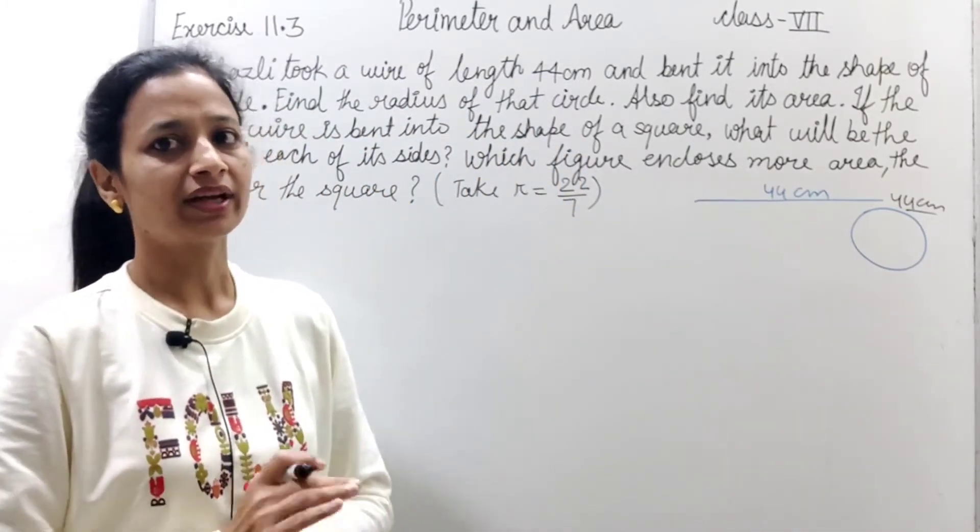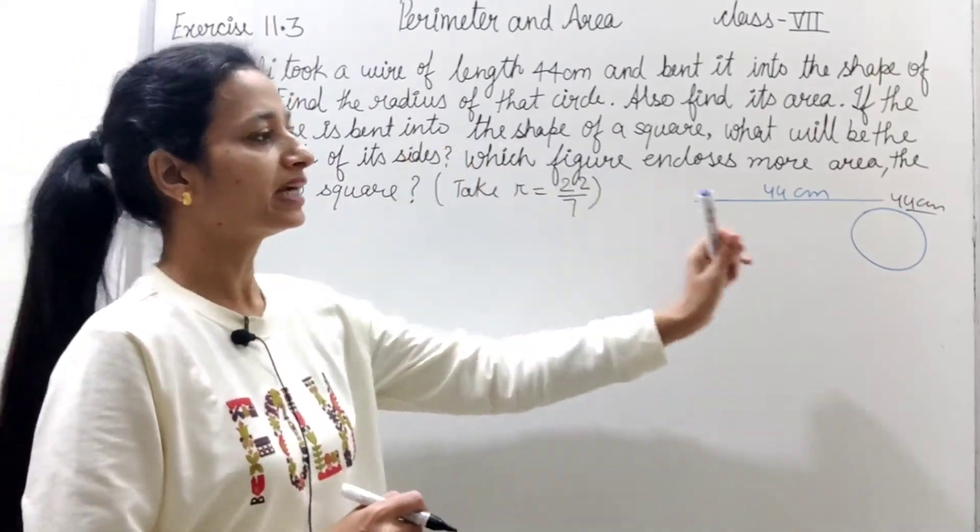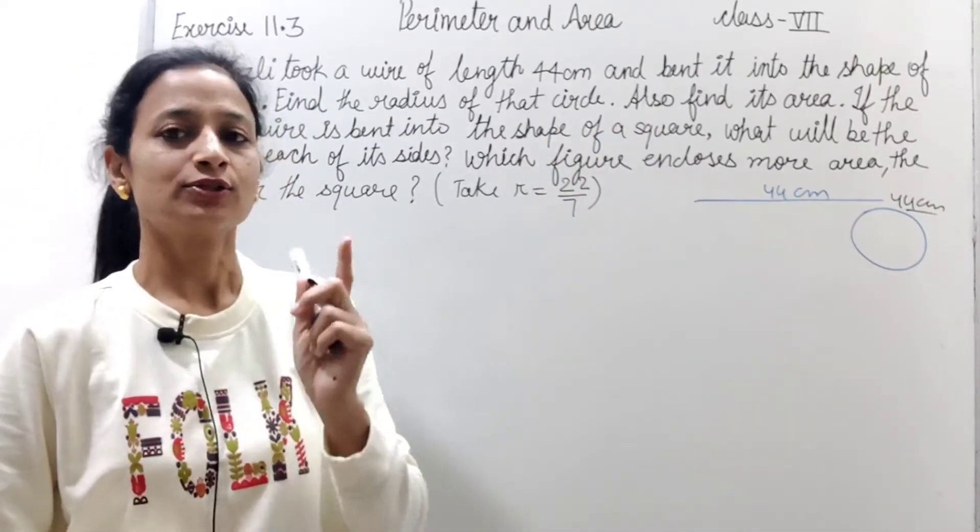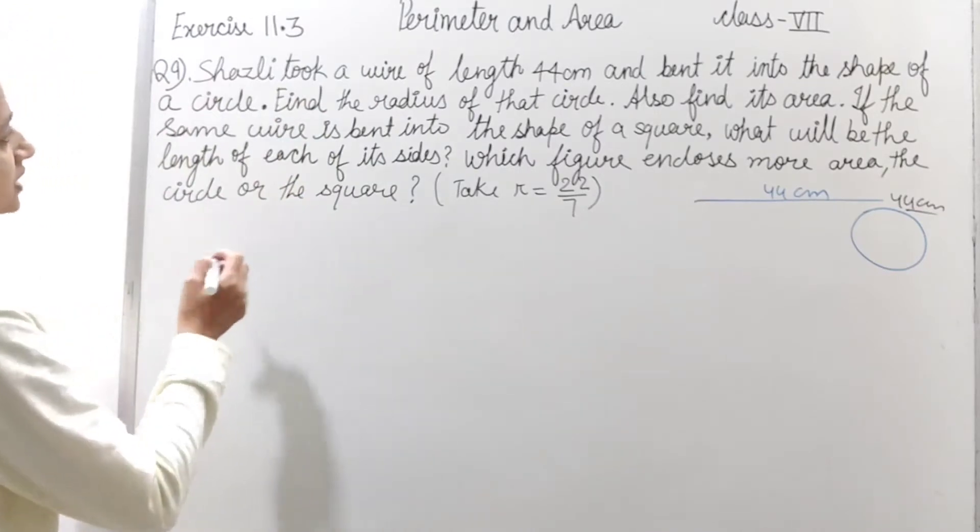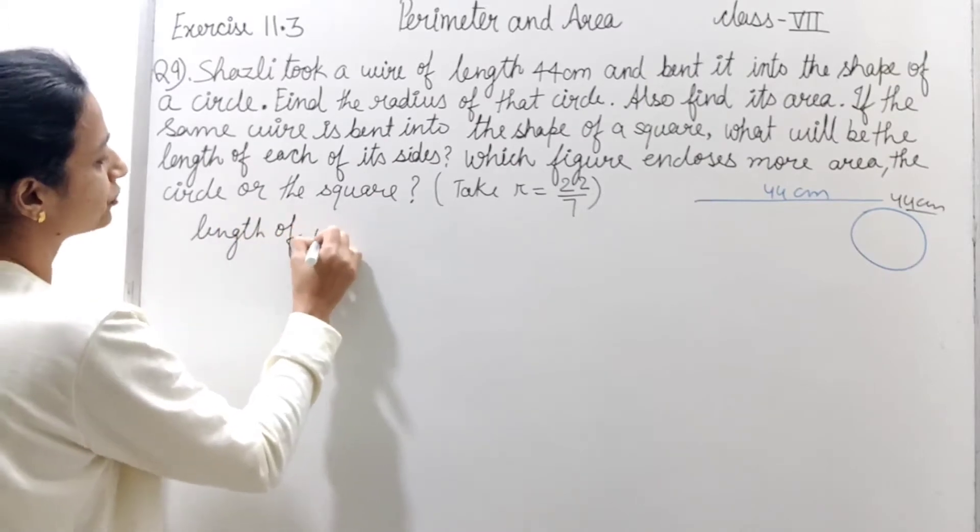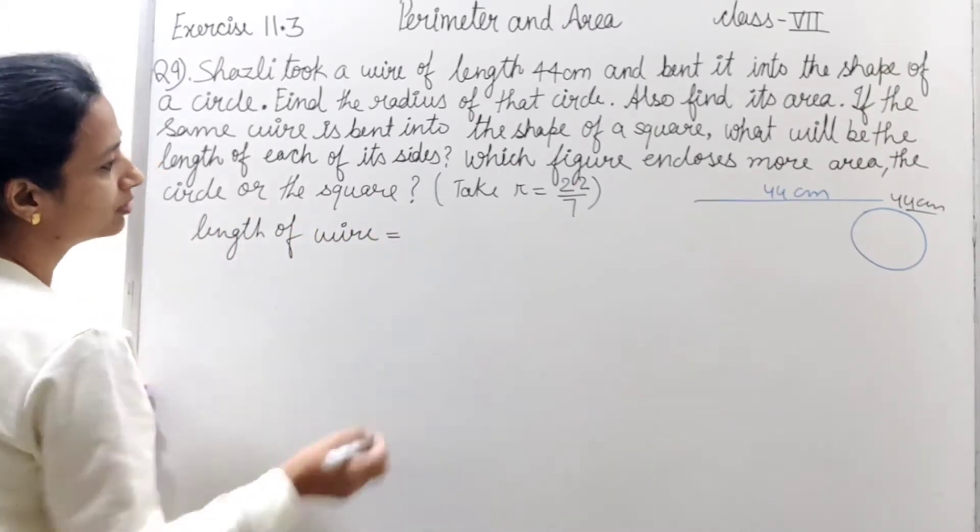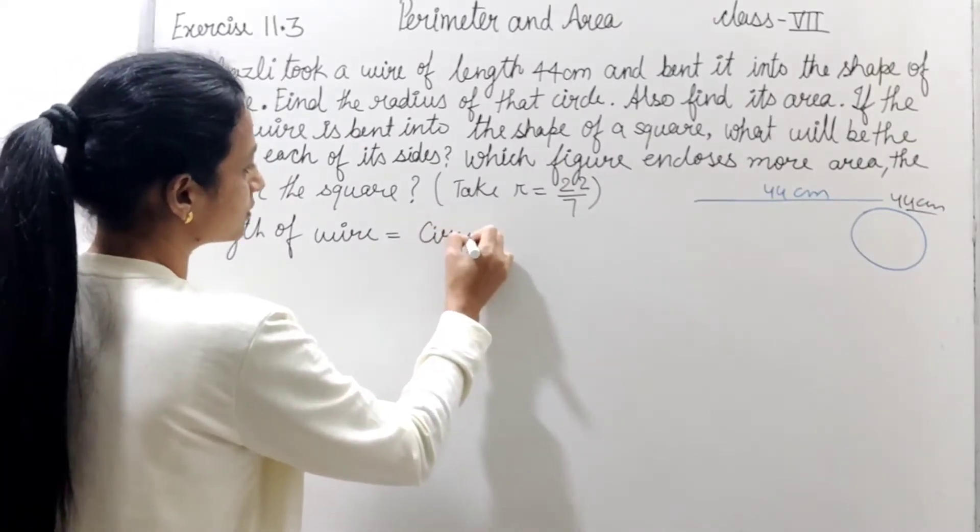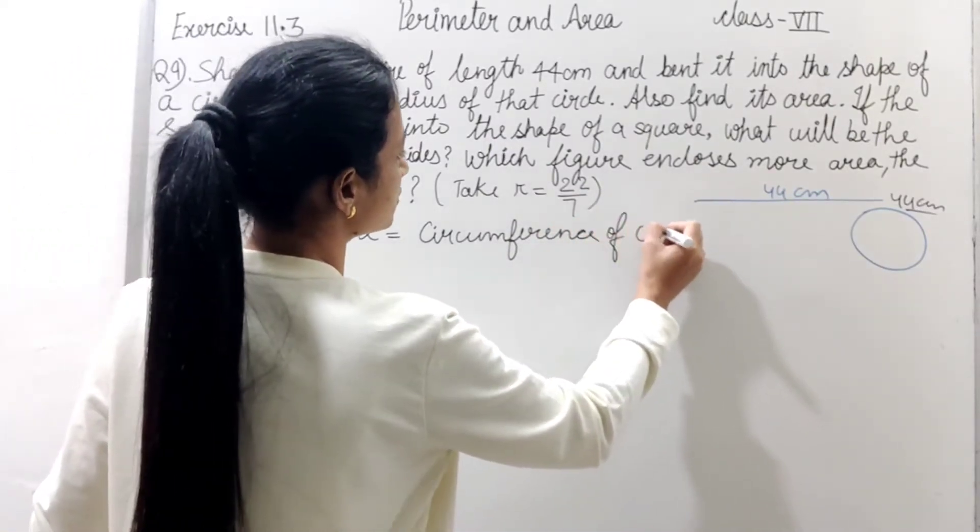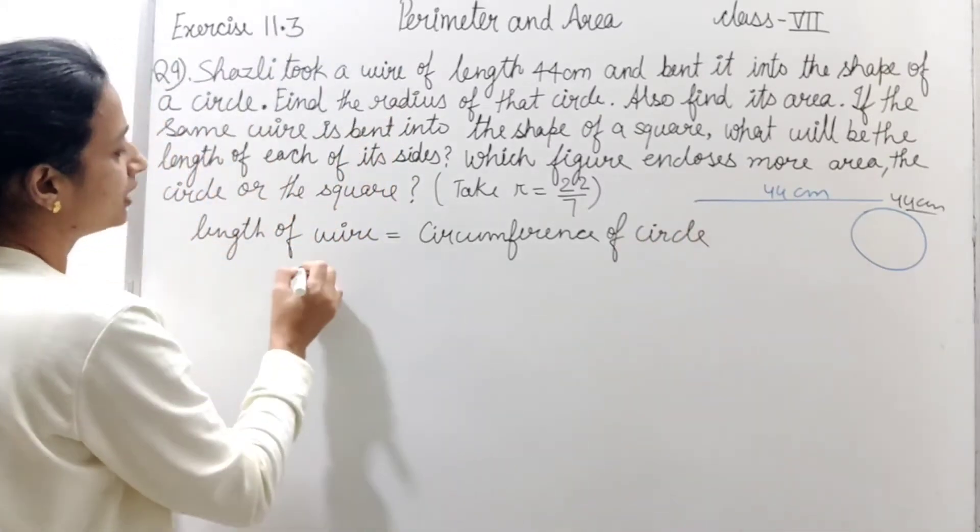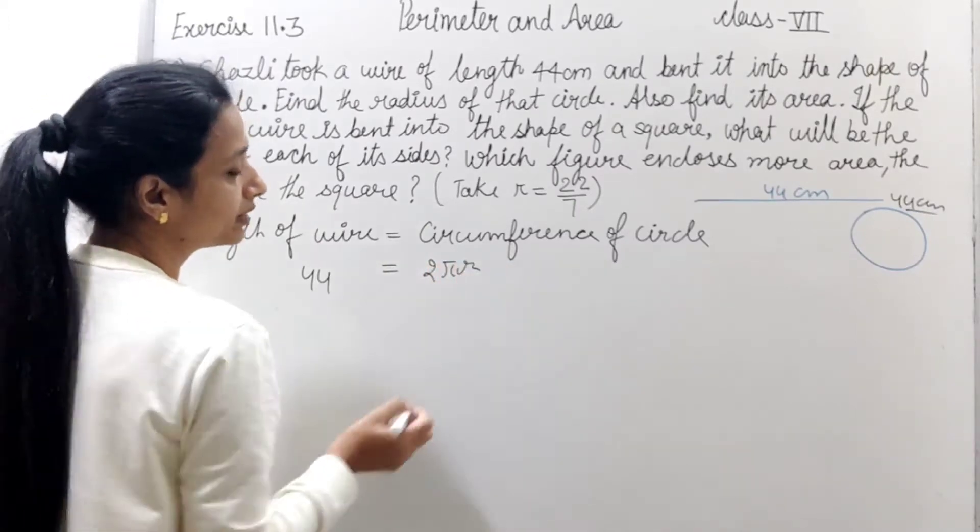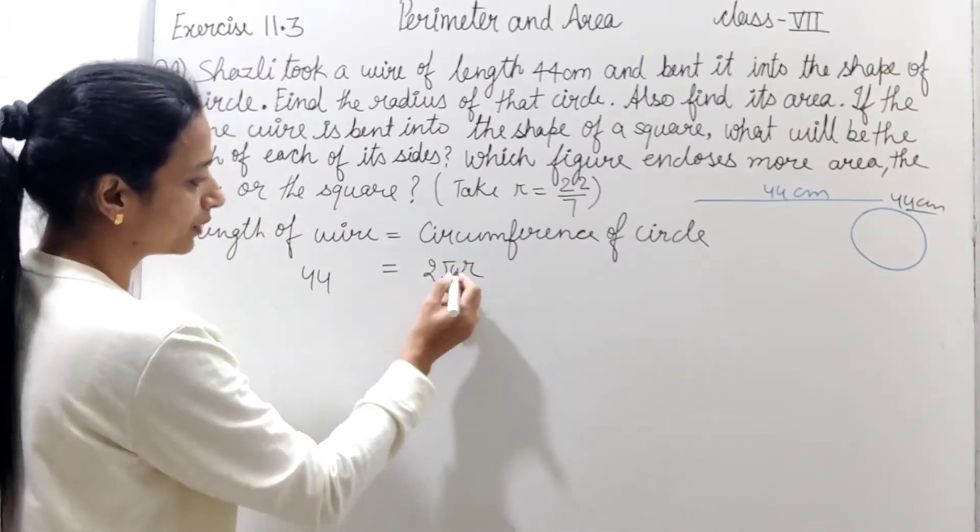Ye jo circumference hai, ye bhi to 44 cm ho jayegi na? Wire ko hi bent karke circle banaya gaya hai. To agar hume circumference given hai, to wahan se hum kya nikaal sakte hai? Radius. Radius nikalenge and then uske baad jo bhi humse pucha gaya ho nikalenge.